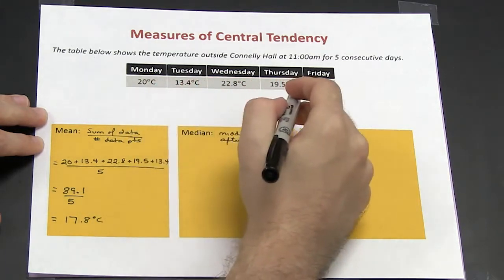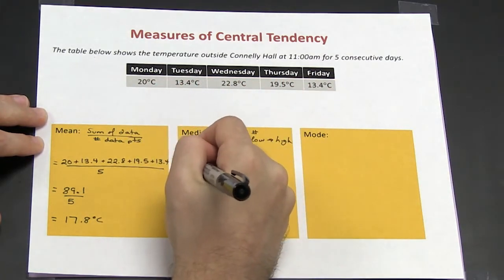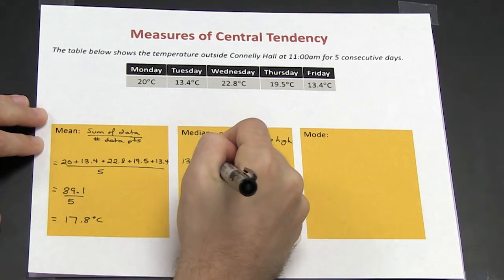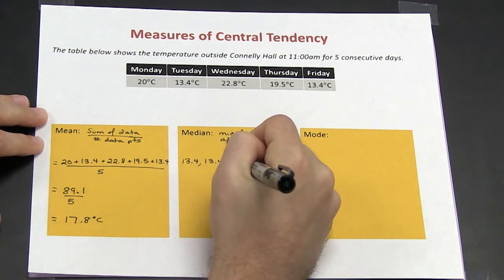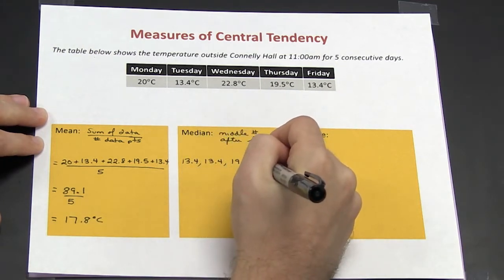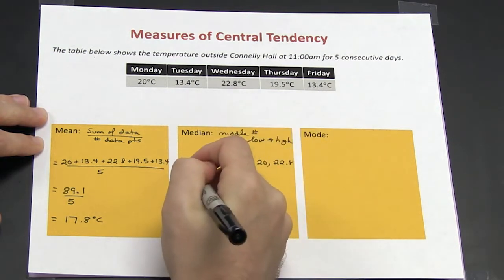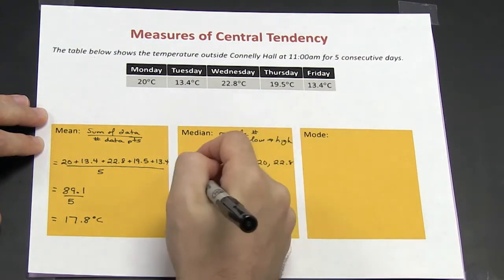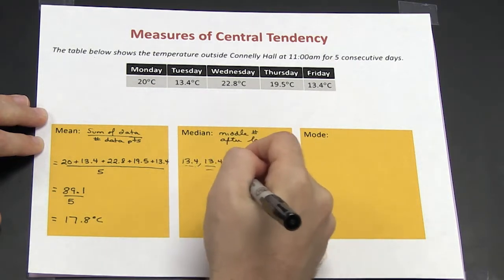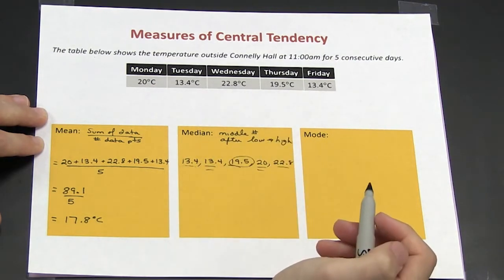So I will arrange these numbers from lowest to highest: 13.4, 13.4, 19.5, 20, and 22.8. I look to see what number is in the middle, and we see that it is 19.5.